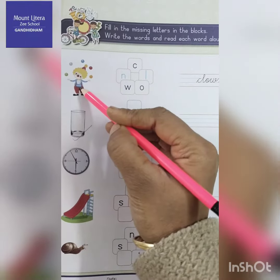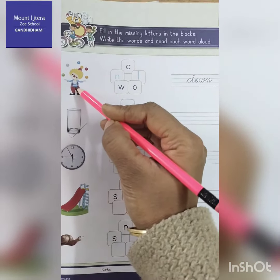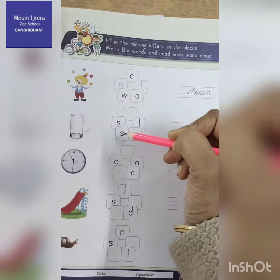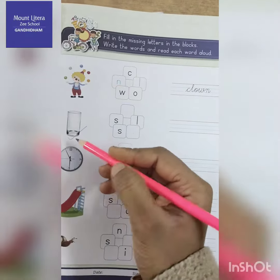The first one is clown. Clown. So we have here 'c', 'n', and 'l'. Clown.